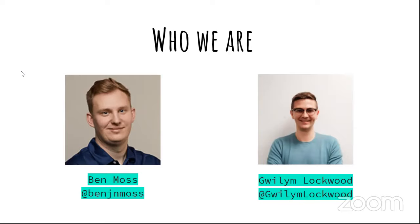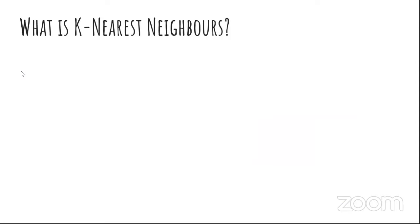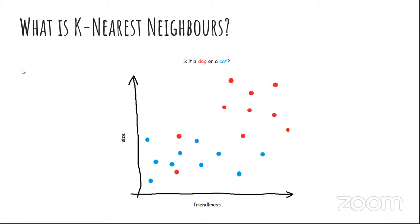Let's talk about K-Nearest Neighbors. What is it? The K bit is easy — it's just a stand-in for a number we haven't decided yet. We could look for the two nearest neighbors, the five nearest neighbors, the 17 nearest neighbors — whatever we decide. The nearest neighbors bit is how close those neighbors are to a particular thing over a combination of variables. Those variables could be any numeric variables you can think of. The KNN analysis calculates the distances between the thing and the potential neighbors and tells you which the closest ones are.